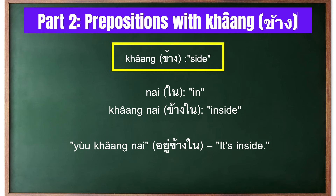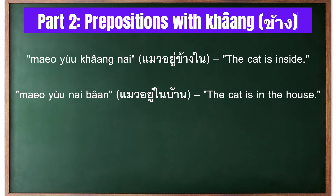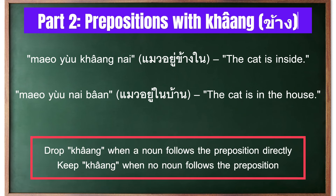The basic preposition ใน means 'in'. Adding ข้าง to it gives ข้างใน, which means 'inside'. For example, to say 'it's inside' you use ข้างใน. To say 'the cat is inside' you use แมวอยู่ข้างใน. And to say 'the cat is in the house' you use แมวอยู่ในบ้าน.